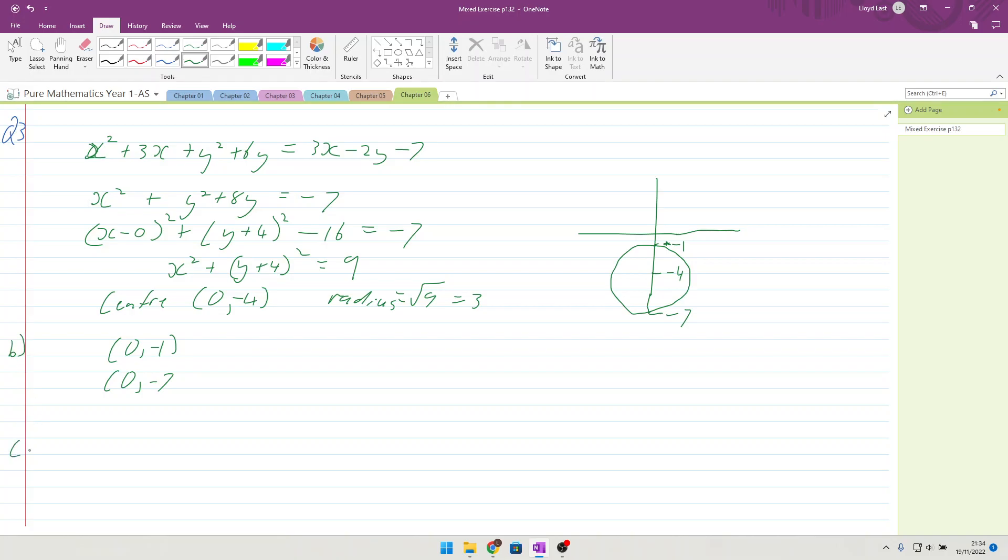Final part: show that the circle does not intersect the x-axis. Distance of center to origin is equal to 4. Radius is equal to 3. Therefore 3 is less than 4, so no crossing of the x-axis.